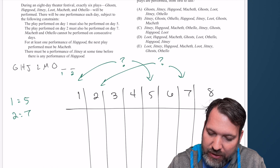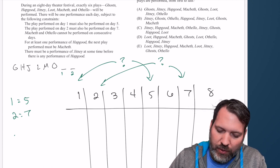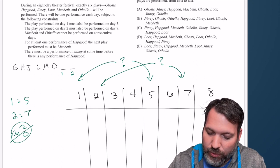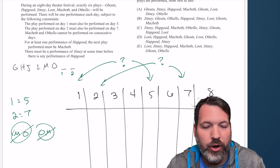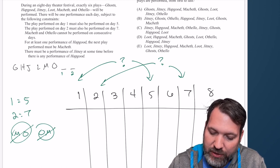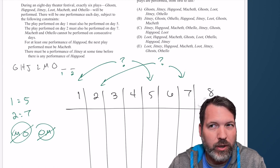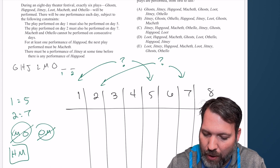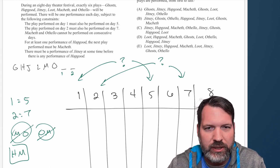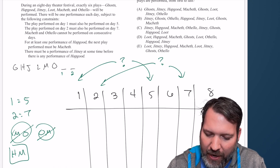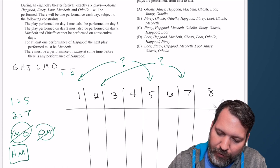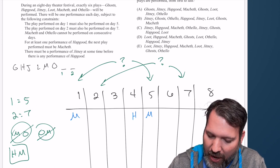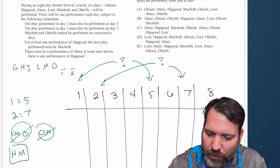Whatever gets performed on day two will get performed on day seven. Now, one nice thing is that that takes care of these other two elements. These must be the repeated elements. Whatever goes first and second gets repeated in slot five and slot seven. Macbeth and Othello cannot be performed on consecutive days. It does not specify the order here. So I think this is both M cannot go before O and the other way around. I'm actually just going to write it down twice. It is also the case that O cannot be before M. For at least one performance of Hapgood, the next play performed must be Macbeth.